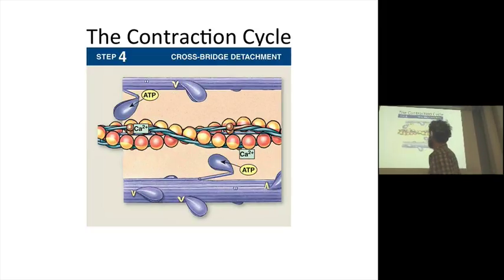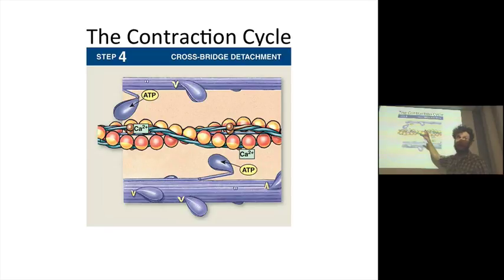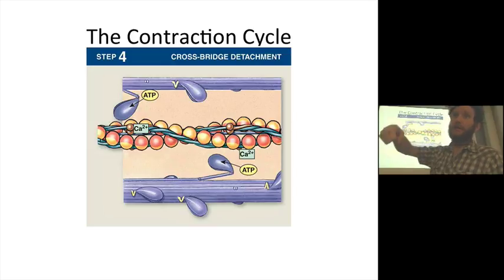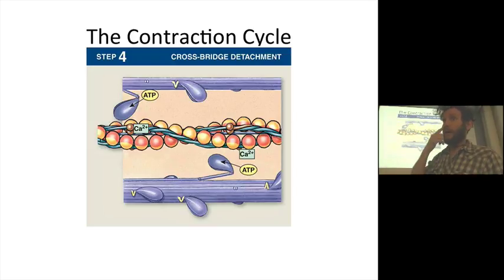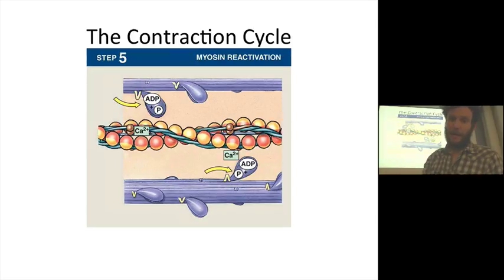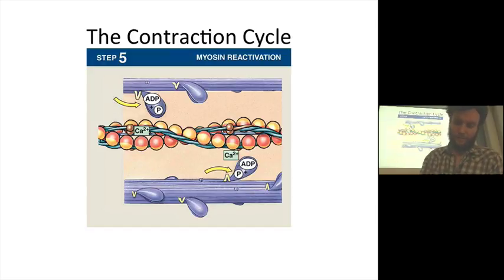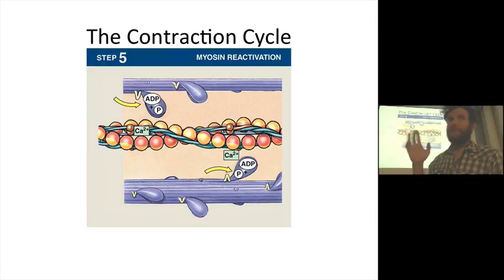The next thing that happens is ATP comes and binds, releasing that cross-bridge. The cross-bridge detachment is coincident with ATP binding. When that binding happens, we have hydrolysis and a reset. If there's not ATP, we're not going to be able to release that cross-bridge.